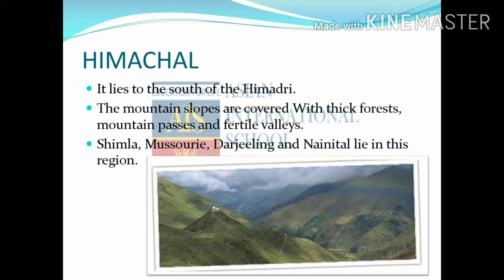Now we will discuss the second range, the Himachal. Himachal lies to the south of the Himadri. The mountain slopes are covered with thick forests, mountain passes and fertile valleys. Shimla, Mussoorie, Darjeeling and Nainital lie in this region.